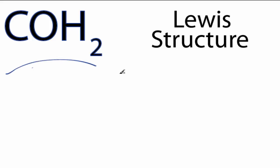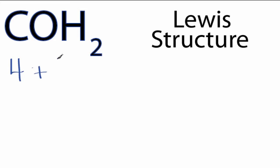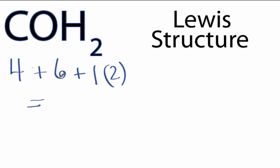This is the COH2 Lewis structure. On the periodic table, carbon is in group 4, it has 4 valence electrons. Oxygen is in group 6, with 6 valence electrons. And then hydrogen is in group 1, but we have 2 of those, so multiply that by 2. 4 plus 6 plus 2 gives us 12 valence electrons.